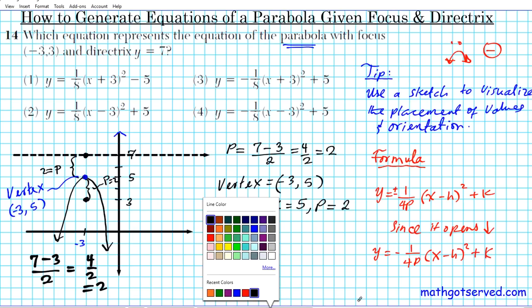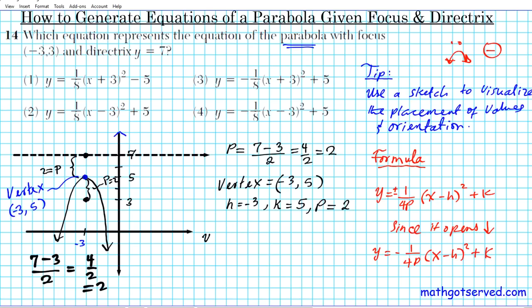Our answer, we're going to put everything together now, is going to be y equals negative 1 over 4p, which is 2, times (x - h), so minus (-3), squared, plus k, which is 5. I just took these three values and put it in here. So let's make it look pretty. The final answer is y equals -1/8 times (x + 3)² plus 5.